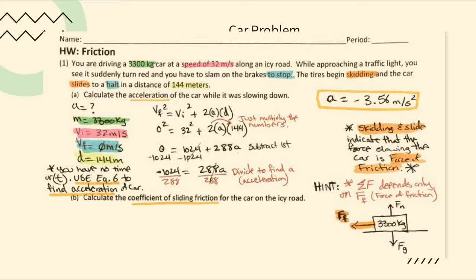To solve for acceleration, first subtract 1024 from both sides: −1024 = 288a. Then divide both sides by 288. The answer for part a is acceleration = −3.56 meters per second squared. That makes sense because the car is slowing down — velocity is to the right but acceleration is in the opposite direction. We didn't use any force equations for part a.